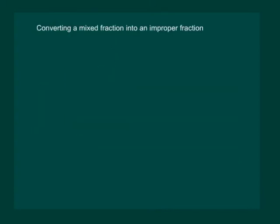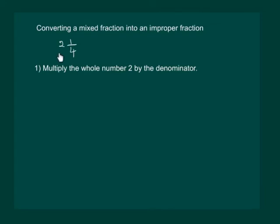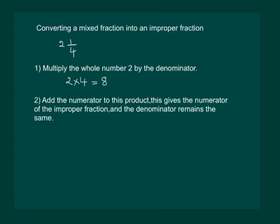How do we convert a mixed fraction into an improper fraction? Say we take a mixed fraction 2 and 1 by 4. The first step is to multiply the whole number with the denominator, so we get 2 into 4 equal to 8. The next step is to add the numerator to this product, so we have 8 plus 1 equal to 9. And our mixed fraction becomes 9 by 4.